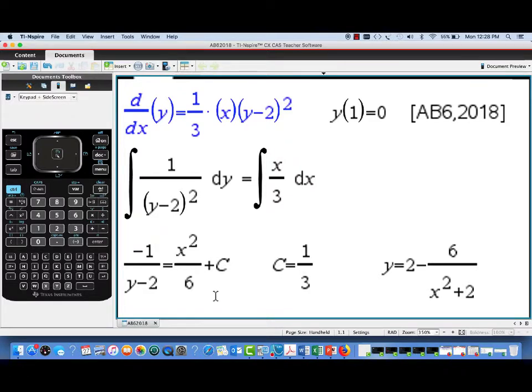And so to make y equal to zero when x equals one, we've substituted those values and can solve for c. We get one third. And then we finally do some algebraic simplification and get this final result, y equals two minus six over the quantity x squared plus two.